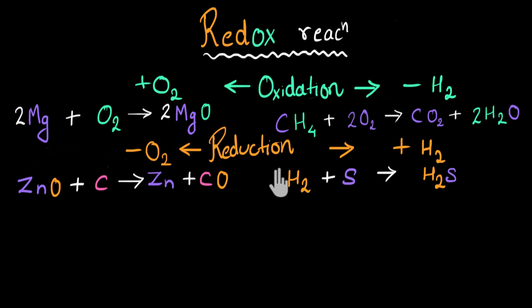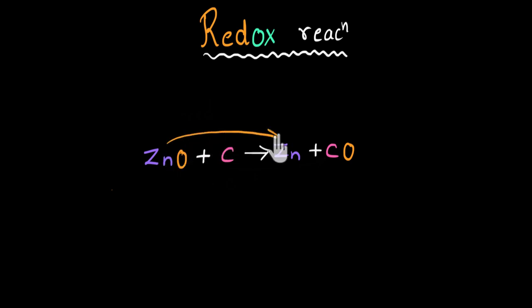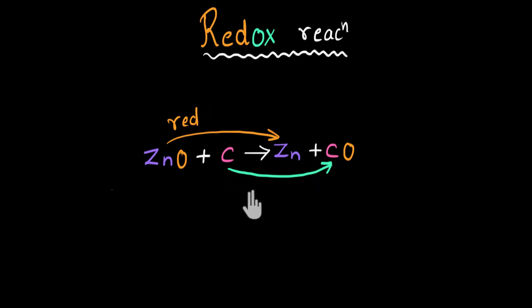Let's see some examples of redox reaction. Here, zinc oxide is reacting with carbon to give zinc and carbon monoxide. If we focus on zinc — initially zinc was combined with oxygen as zinc oxide, but during the reaction zinc is losing its oxygen. Loss of oxygen is called reduction, so zinc is undergoing a reduction reaction. If we focus on carbon, finally carbon is attached with oxygen, but initially carbon did not have oxygen. So over the course of reaction, oxygen gets added to carbon, and addition of oxygen is oxidation. Since both reduction and oxidation are happening in the same reaction, we call this a redox reaction.